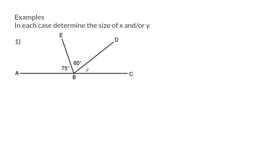In example 1, we need to get the size of angle X. You can see that all three angles together lie on a straight line, and therefore should add up to 180 degrees. So, angle X plus the 60 degrees plus the 75 degrees should equal 180 degrees, and the reason for this is angles on a straight line.